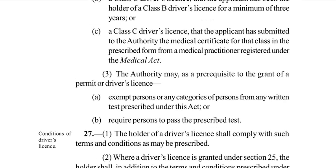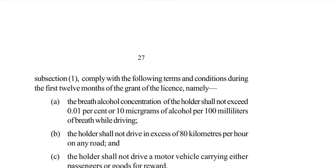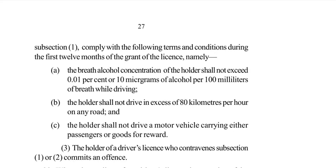Looking back at subsection 1 and 2: subsection 1 — the holder of a driver's license shall comply with such terms and conditions as may be prescribed. Subsection 2 — where a driver's license is granted under Section 25, the holder shall, in addition to the prescribed terms, comply with the following during the first 12 months: the breath alcohol concentration shall not exceed 0.01% or 10 micrograms of alcohol per 100 millilitres of breath while driving.